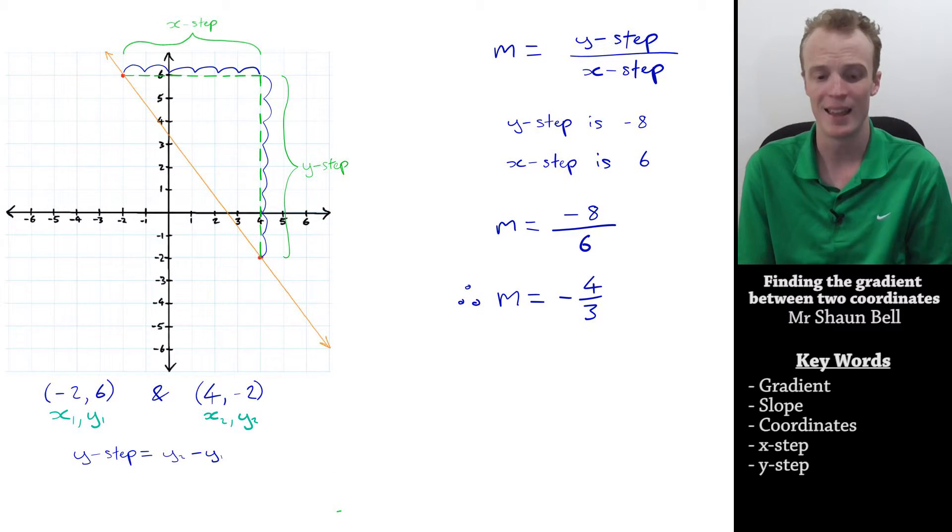So if I did that here, y2 is negative 2, and we subtract y1, which is 6. So we have negative 2 subtract 6, which is equal to negative 8. Therefore, our y step is equal to negative 8, which is what we found before.